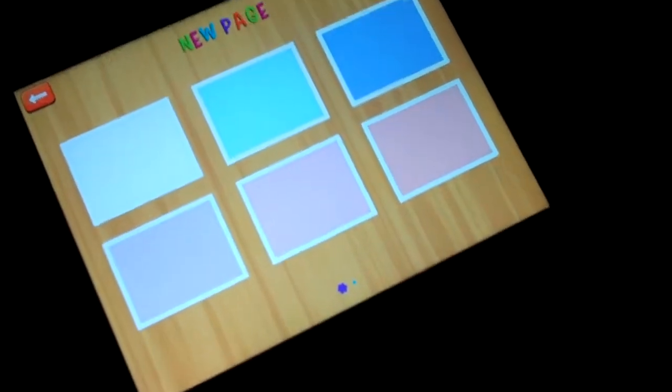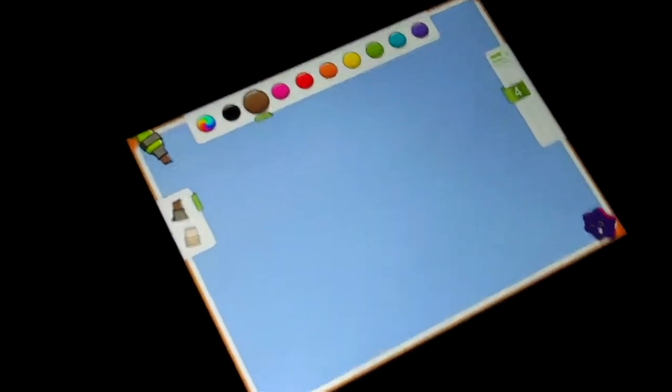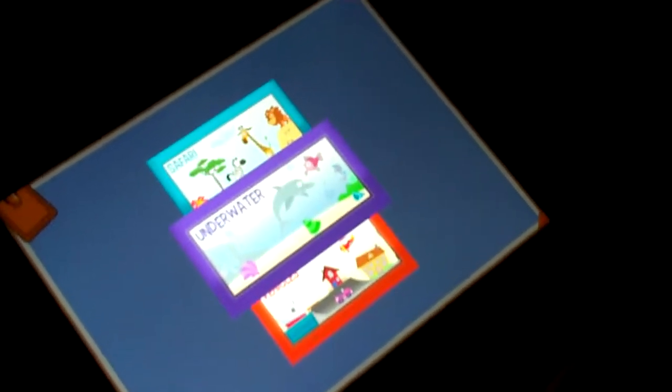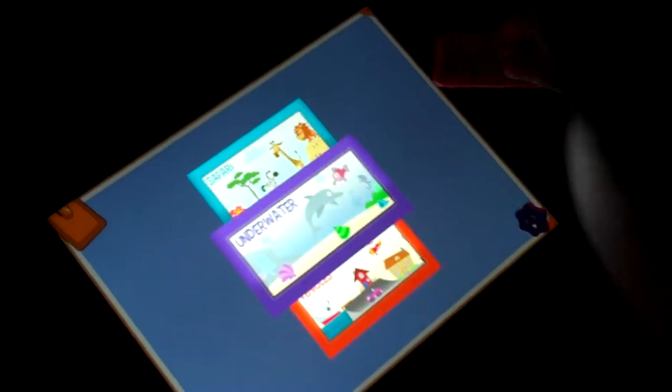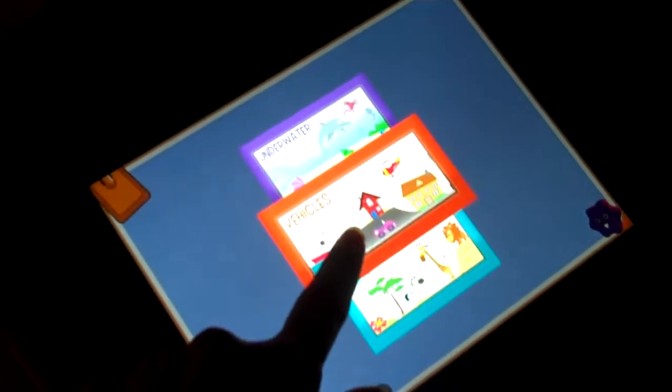Okay, look at this little man. Alright, pick the page you want. Purple, nice color. Now you can draw. Look what you can do. Pick a scene you want: underwater, safari, or vehicles. You want this one?